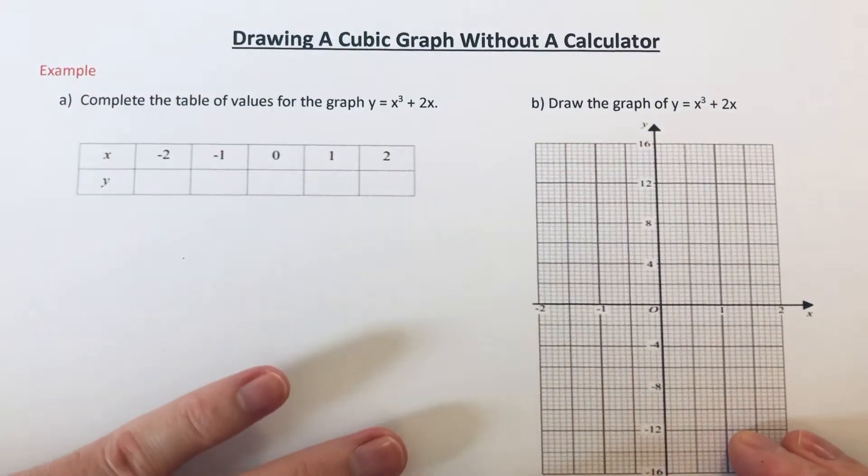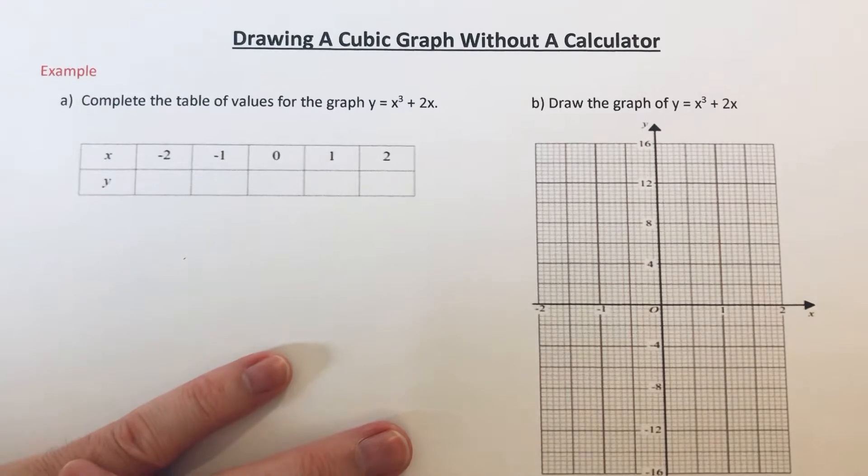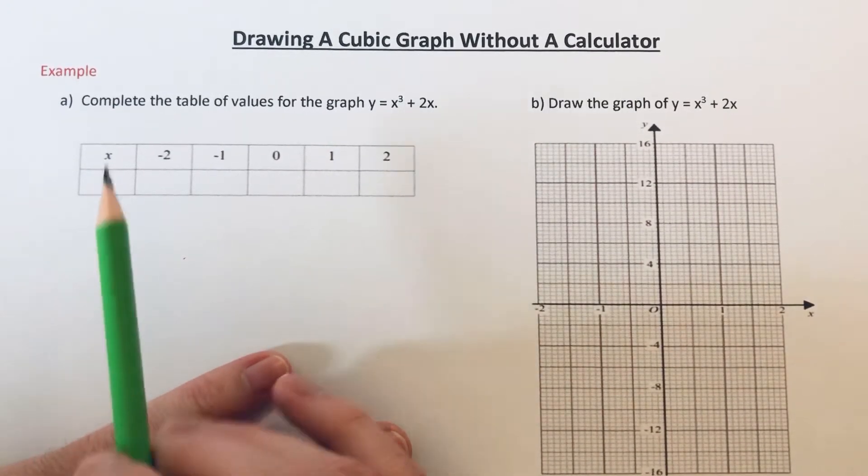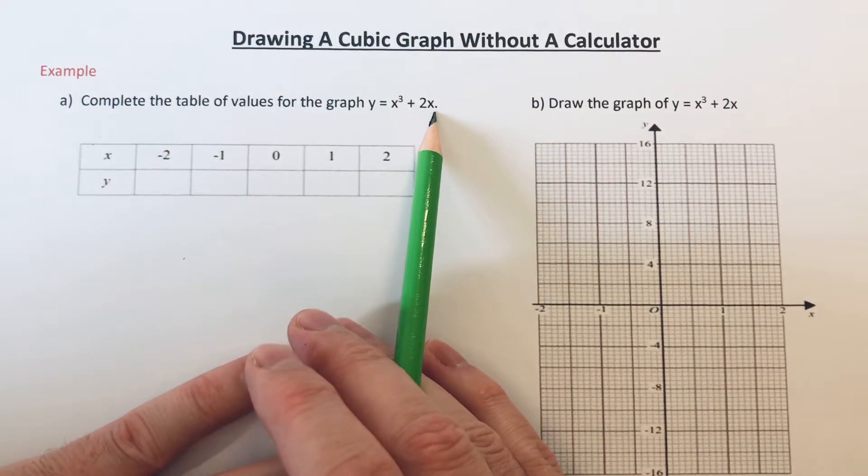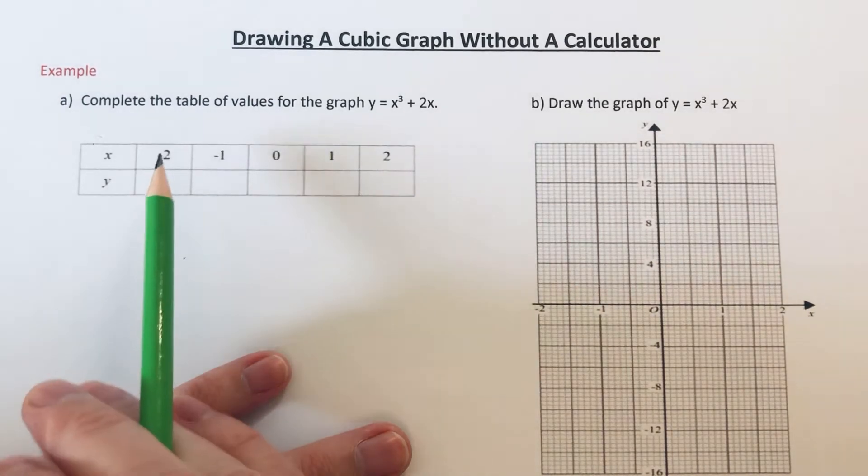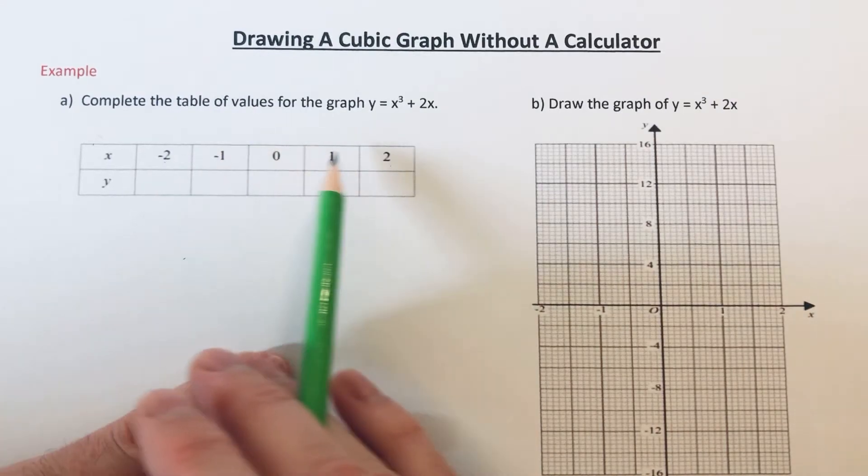Hi guys, welcome back. Today I'm going to show you how to draw a cubic graph without a calculator. So let's have a look at the example that we have. We've got to complete the table of values for the graph y equals x cubed plus 2x. And the graph goes from minus 2 to plus 2. So we've got to work out the y coordinates from minus 2 to 2.